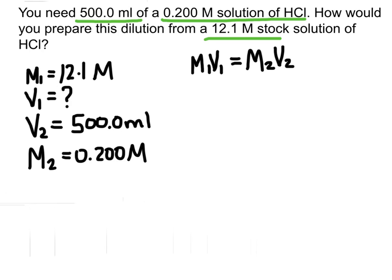We need to figure out how much of this concentrated solution to start with. Once we find out how much of this initial solution we need, we just add water to get it up to 500 mils.